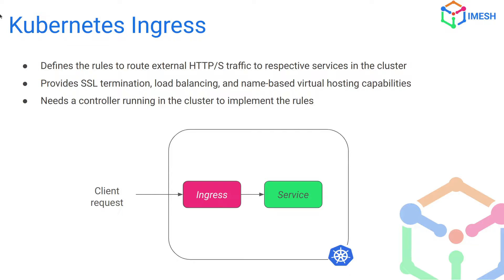Let's have a look at Kubernetes Ingress. Here we can define rules to route external traffic into the cluster. It provides features such as load balancing, virtual hosting capabilities, and SSL termination. Although you need to have a controller running that will implement all these rules. The ingress resource provided by Kubernetes is used to implement that, and the client resource will come through it and end up in the service.